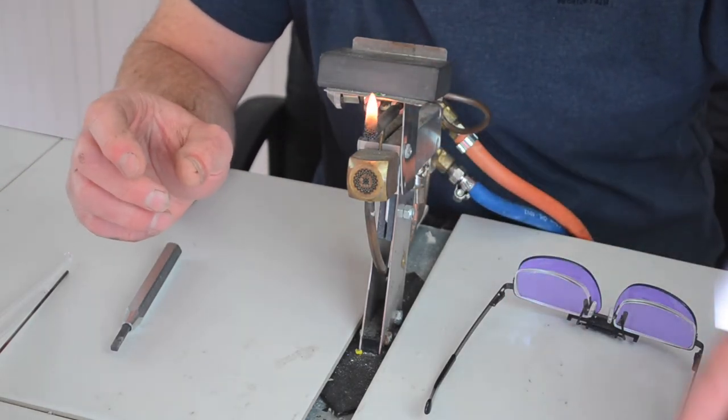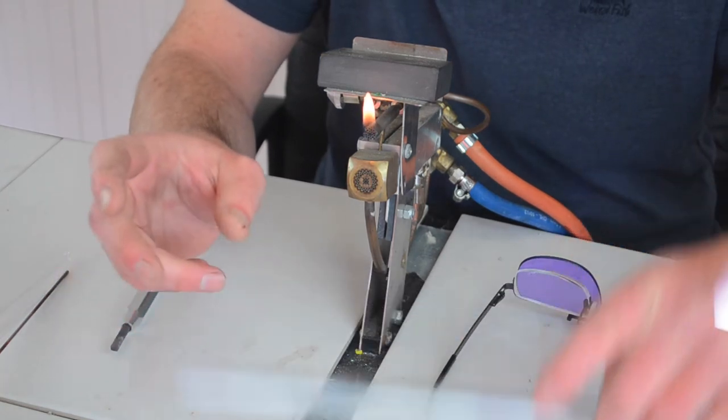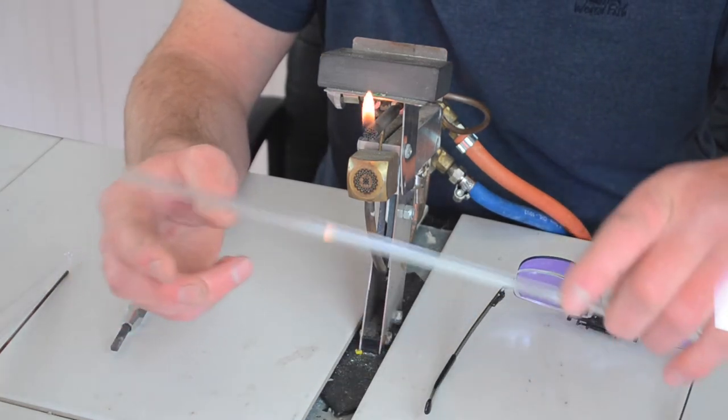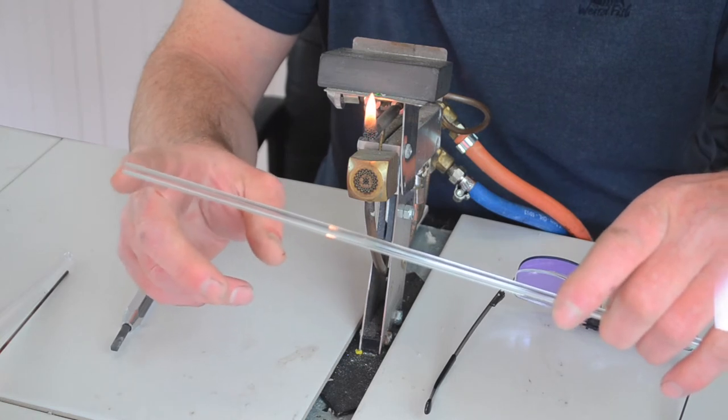So we're starting with 17mm tubing, this is obviously borosilicate tubing, and then to form the wick we've got some 6mm, 6mm 1.5mm wall.